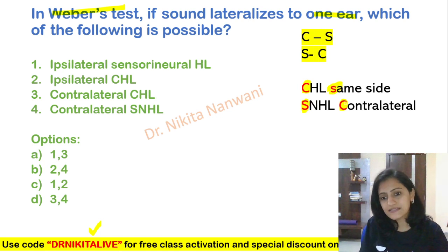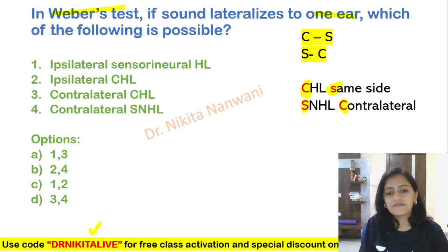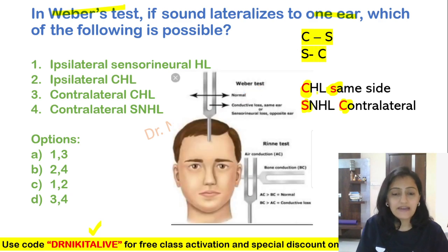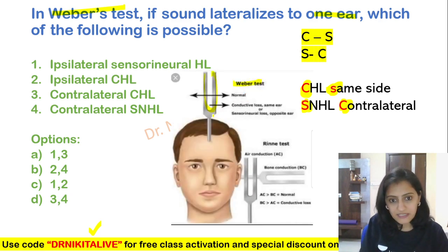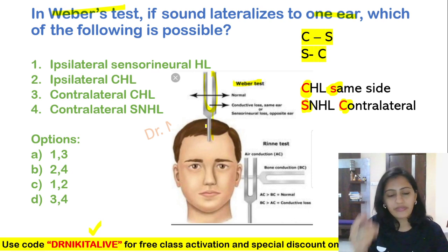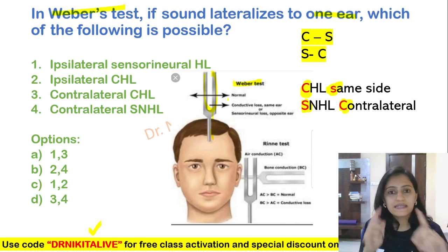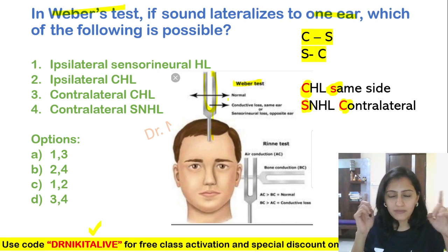C is for S and S is for C. That means same side conductive hearing loss or contralateral SNHL. Let's have a look at this image here. This is how the Weber's test is performed — the tuning fork here on the forehead — and we see if it is normal, both ears would be equal.